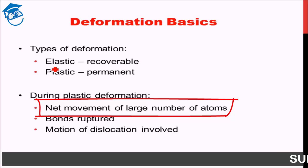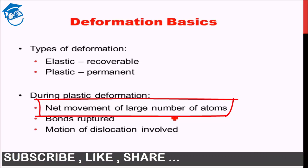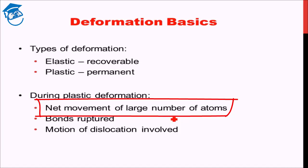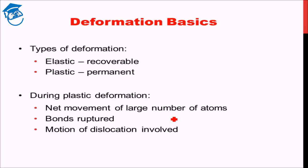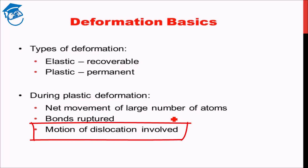There is a net movement of a large number of atoms which cannot return back to their initial position, therefore that is permanent in nature. The motion of dislocation is the very fundamental concept which drives plastic deformation. For plastic deformation to take place, one of the basic requirements is that there has to be dislocation motion. Dislocation motion is what mainly drives plastic deformation.